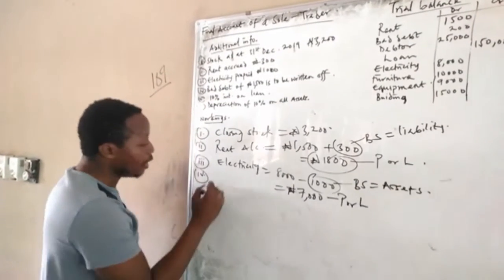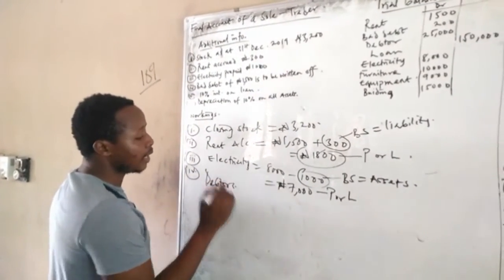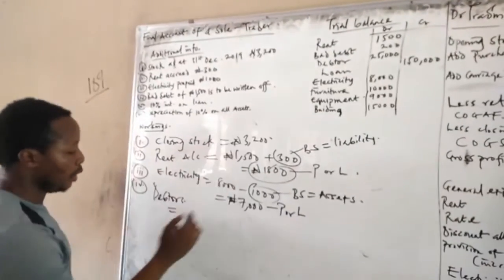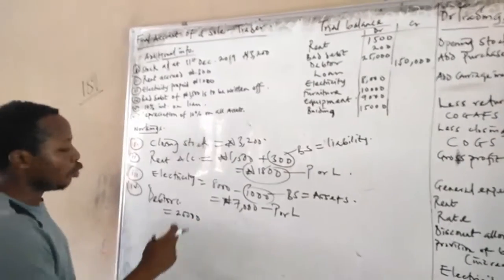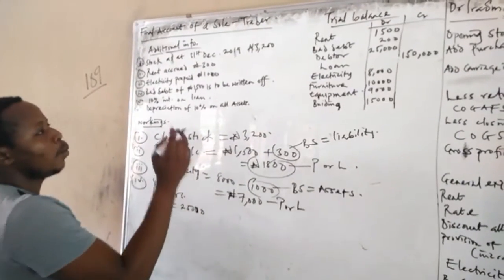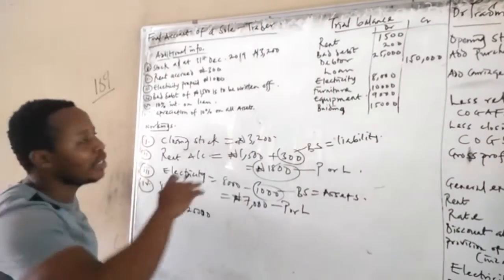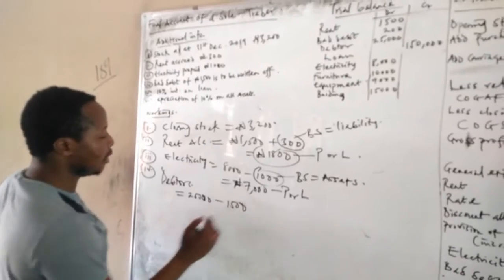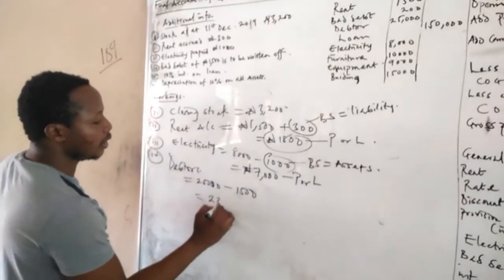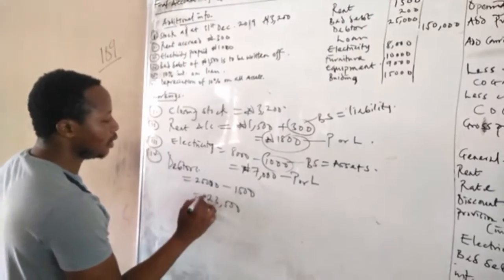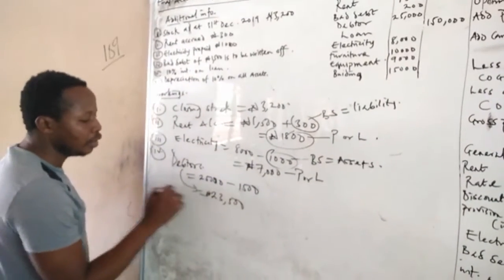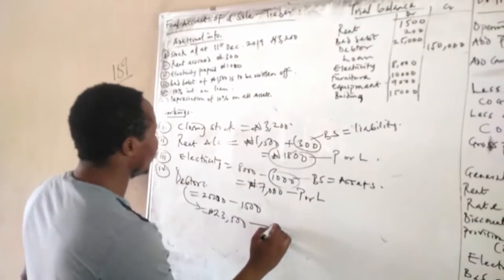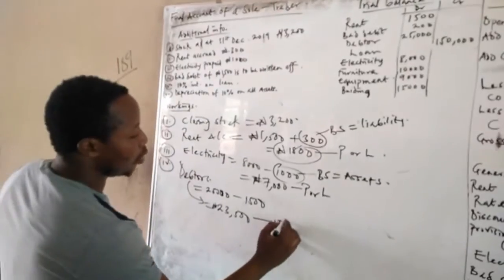Open your debtors account. If the total debtors in the trial balance is 25,000, subtract the bad debt of 1,500 written off, leaving 23,500. This new figure, 23,500, is the amount that will go to your balance sheet — not the original debtors figure.